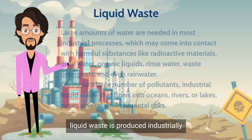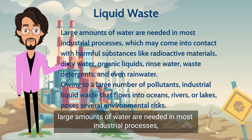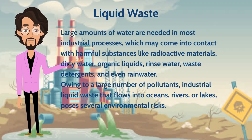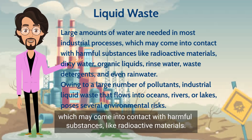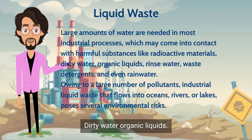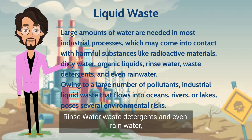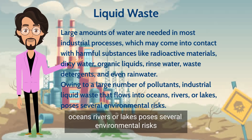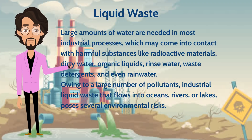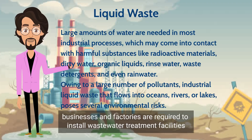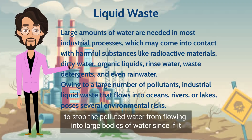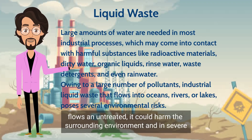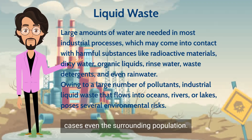Liquid waste is produced industrially. Large amounts of water are needed in most industrial processes, which may come into contact with harmful substances like radioactive materials, dirty water, organic liquids, rinse water, waste detergents, and even rainwater. Owing to a large number of pollutants, industrial liquid waste that flows into oceans, rivers, or lakes poses several environmental risks. Systems and factories are required to install wastewater treatment facilities to stop polluted water from flowing into large bodies of water, since if it flows in untreated, it could harm the surrounding environment and, in severe cases, even the surrounding population.